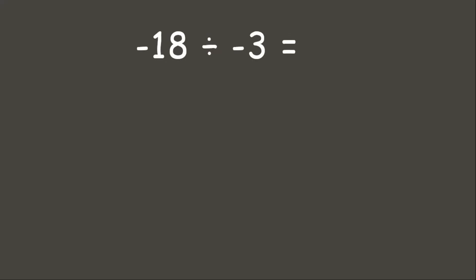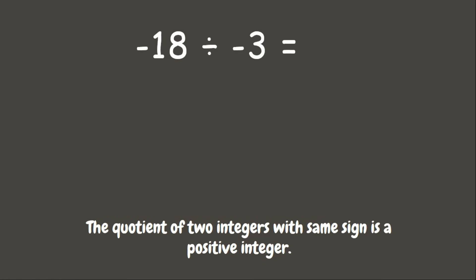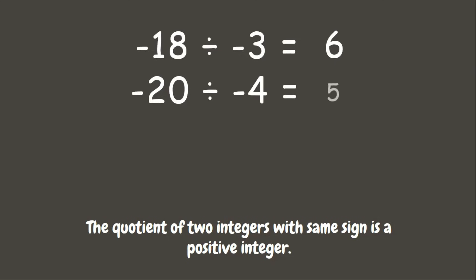Now let us try some examples without using any counters. Our first example is negative 18 divided by negative 3. Remember, when dividing integers with the same sign the answer is positive, so negative 18 divided by negative 3 is positive 6. Next: negative 20 divided by negative 4 — since they are both negatives with the same sign, the answer is positive 5.